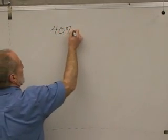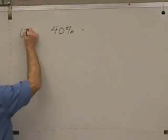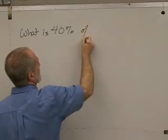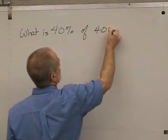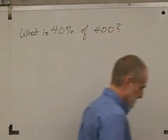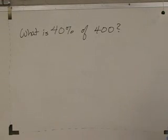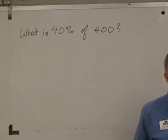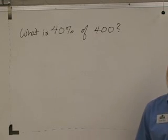40%. What is 40% of 400? Now we could use PBR and identify which one of those is the base, which one of those is the rate, solve for portion, but we don't have to.